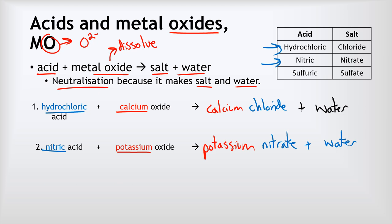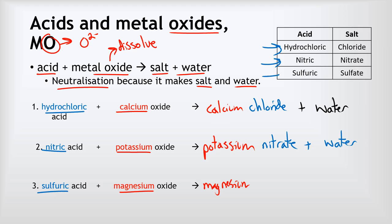Last example: sulfuric acid reacting with magnesium oxide. The base, magnesium oxide, gives us the cation, so it's going to be a magnesium salt. The acid gives us the anion — sulfuric acid produces sulfate salts — so this will be magnesium sulfate. And because it's a neutralization reaction, we get water as well.